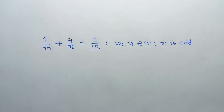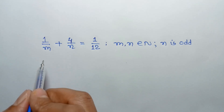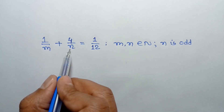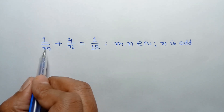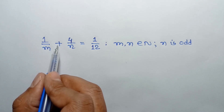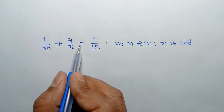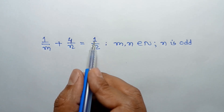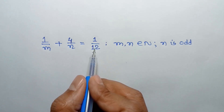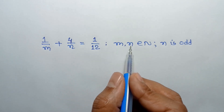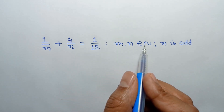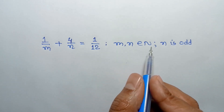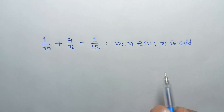Hi everyone. In this video I am going to show how to find the value of m and n, where 1 over m plus 4 over n is equal to 1 over 12, and m, n are natural numbers and n is odd.